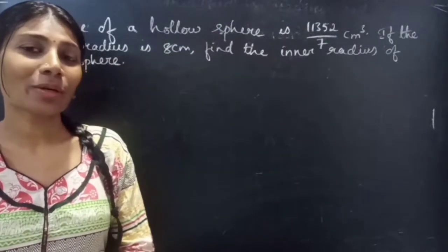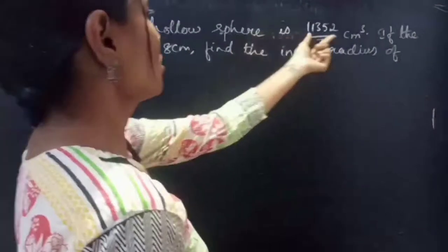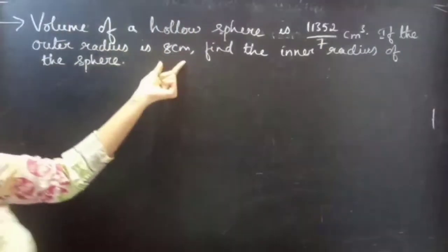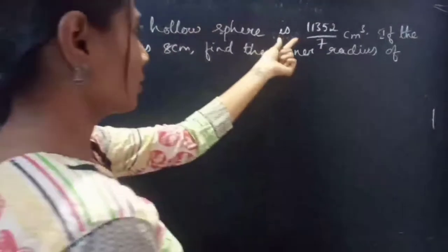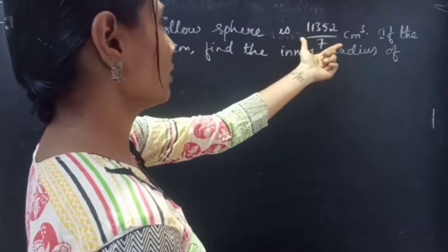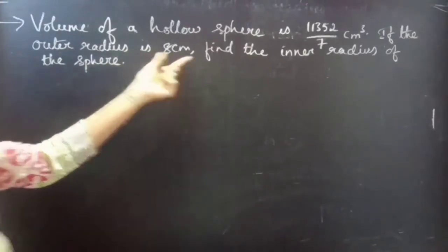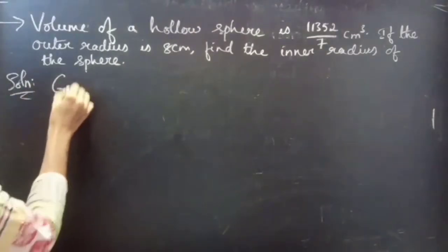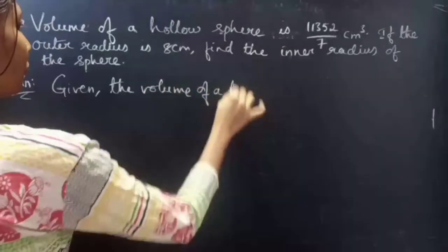Hello everyone, this is Kalpana here. In this video we are going to see a problem from mensuration. The problem: the volume of a hollow sphere is 11352/7 centimeter cube. If the outer radius is 8 centimeter, find the inner radius of the sphere.